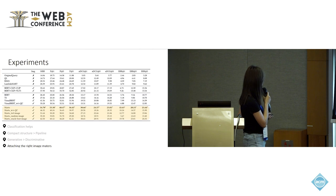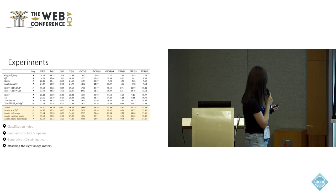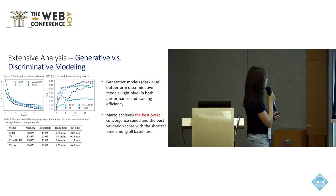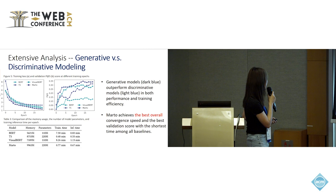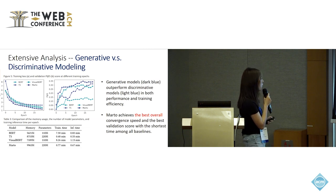We also examined the impact of images. We compared Martel with several variants by attaching topic-relevant images, random images, and oracle-based images. We see that attaching the right images actually matters. We also performed extensive analysis comparing generative and discriminative modeling, showing that generative models — shown in dark blue — outperform discriminative models — shown in light blue — in both performance and training efficiency. A table shows the comparison of memory usage, number of model parameters, and training and inference time per epoch. Martel achieved the best overall convergence speed and best validation score with the shortest time among all baselines.